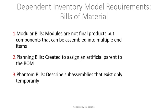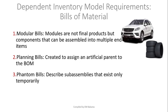An example of a phantom bill: during computer assembly, you use tools like screwdrivers only during the assembly process. Once the computer is finished, those tools aren't delivered with the product. The bill for those temporary-use items is called a phantom bill because it covers subassemblies. An example of a modular bill would be a tire — it's part of the final product, the car, but it's not the car itself.